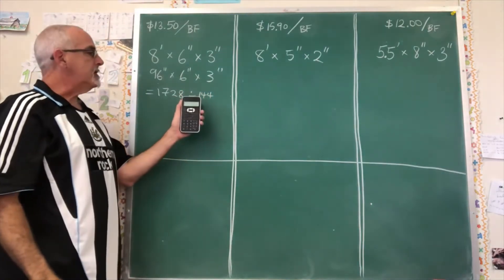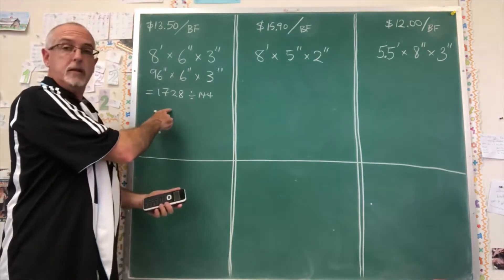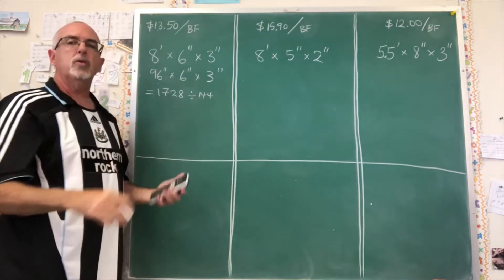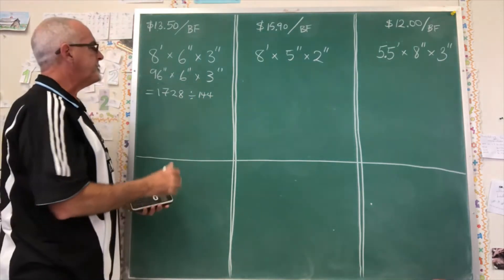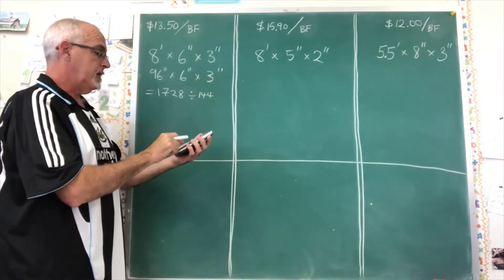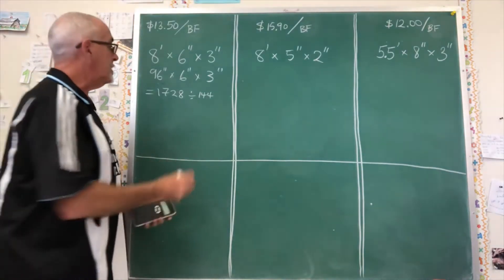That I have to divide by 144. This is inconvenient because that's not quite so easy to do in your head, although you can do a bit of an estimate. 1700 divided by 144 is going to be more than 10, less than 20. Right? Let's see if I'm right. 1728 divided by 144 is 12, exactly 12 in this case. So we have 12 board feet.